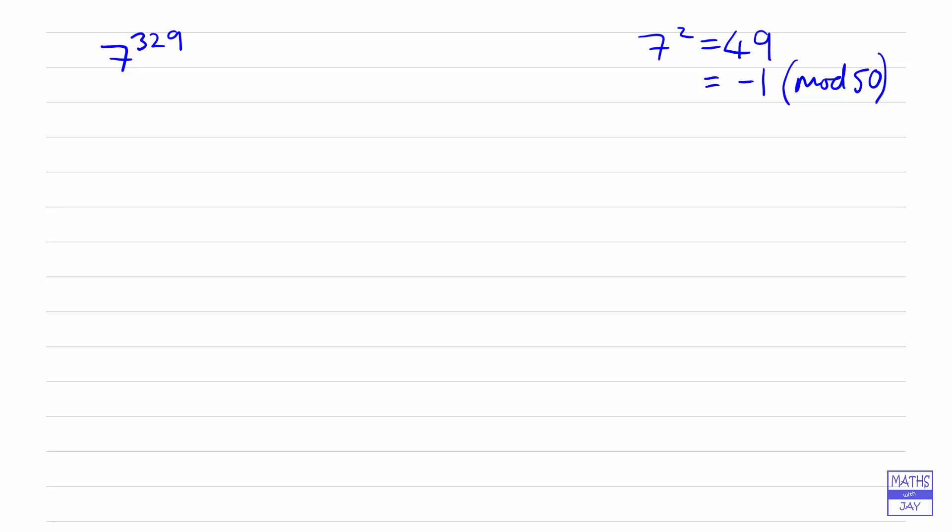So now we want to know what happens when we've got 7 to the power of 329, so we want to know what the least residue is in mod 50.